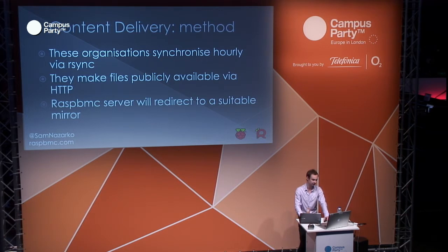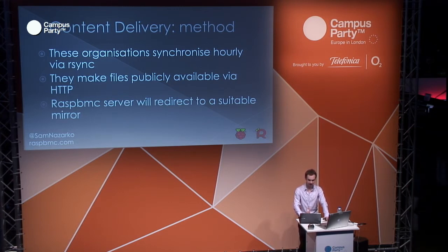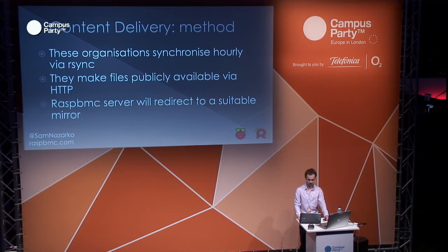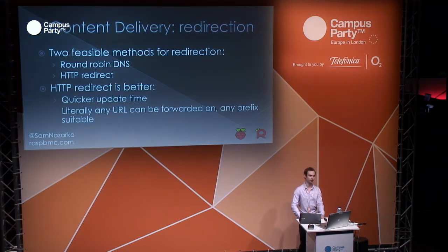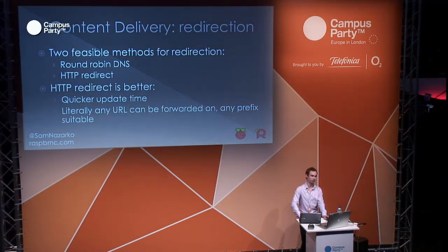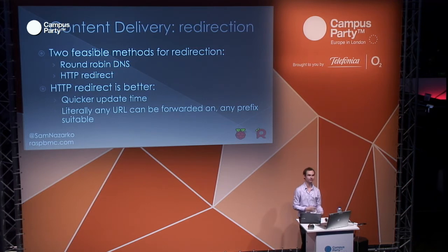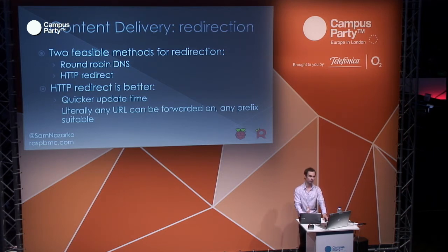These organizations synchronize hourly with my server via rsync, make their files publicly available via HTTP, and then my server redirects a user to a suitable mirror. There are two ways to redirect a user: round robin DNS, or a direct HTTP redirect. The problem with round robin DNS is mainly time-to-live and expiry — if a mirror goes down with my system I can remove them within a second, whereas with round robin DNS you have time-to-live and caching; it could be a couple of days before users are sent somewhere else. I can ping a mirror or check an MD5 checksum, and if it doesn't match, remove it.